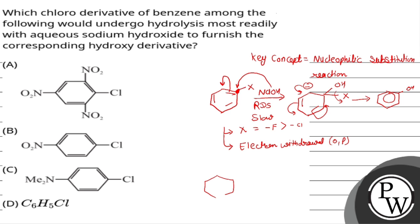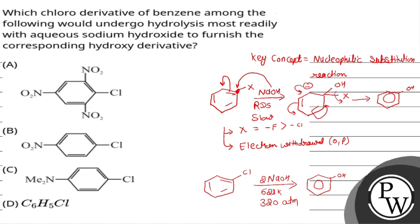If no electron-withdrawing group is present, or if there is no electron-releasing group either — like plain chlorobenzene — then this reaction requires very drastic conditions: 623 Kelvin temperature and around 320 atm pressure. Under these conditions, via nucleophilic substitution reaction, we get phenol.